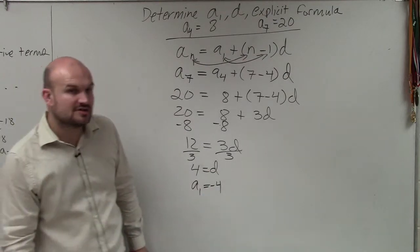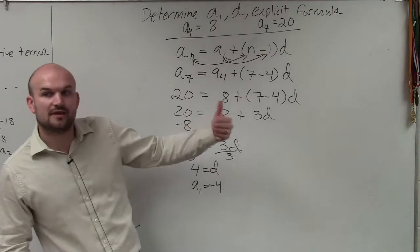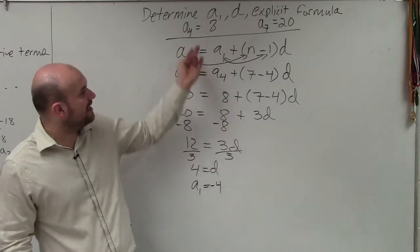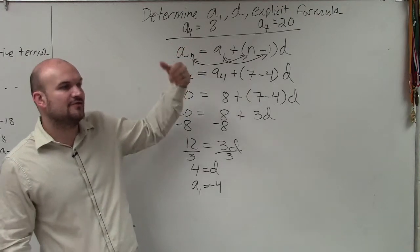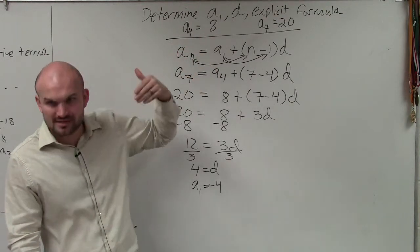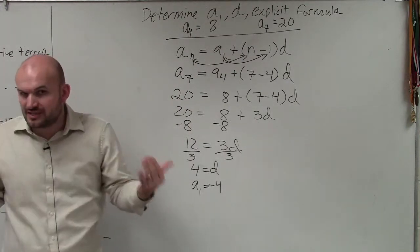So we have a to the first is equal to negative four, okay? Now, there's another thing that needs to go into here. What if I gave you the two values? Instead of a to the fourth and a to the seventh, I gave you a to the 40th and a to the 70th. You're not going to count backwards all the way to a to the first. So how could you just find this value just as is?